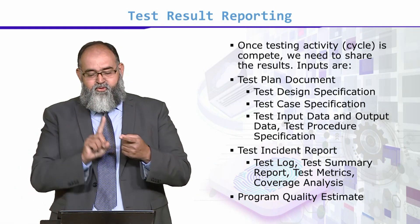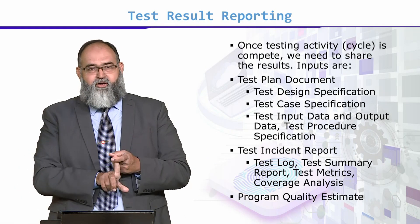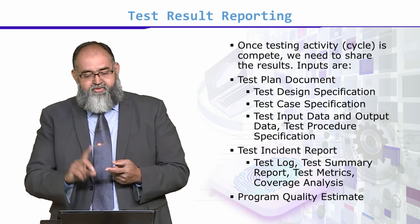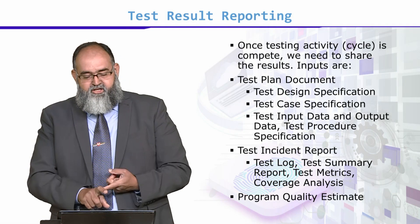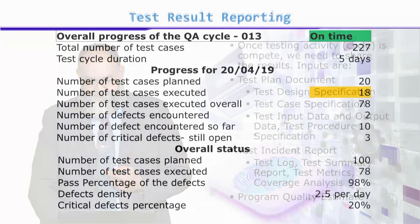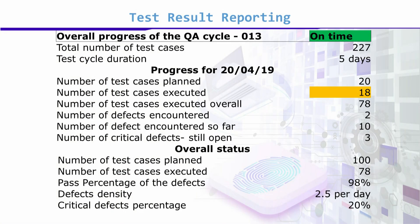So your input is the test plan, and your output is the incident report and quality estimates. Here is an example of test results reporting — an overall report. Overall progress: QA cycle number 13 went on time. Total number of test cases: 227. Test cycle duration was 5 days.